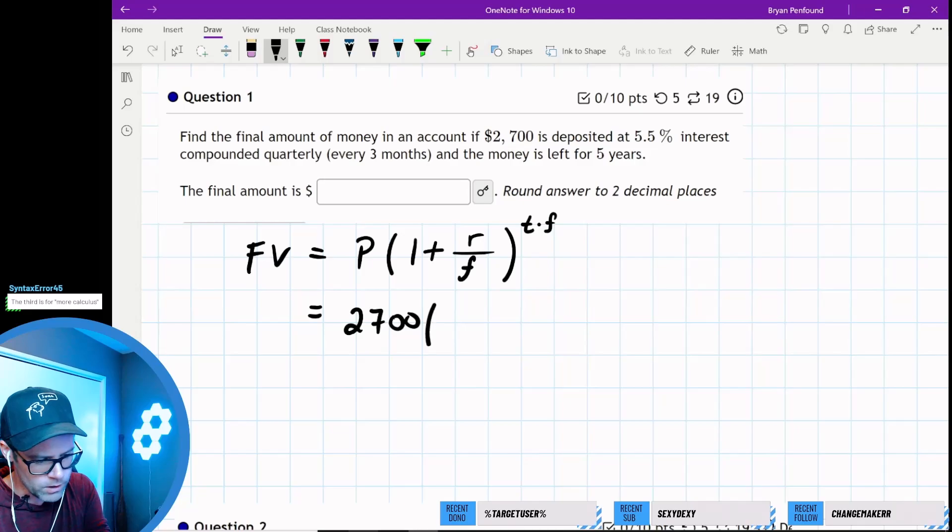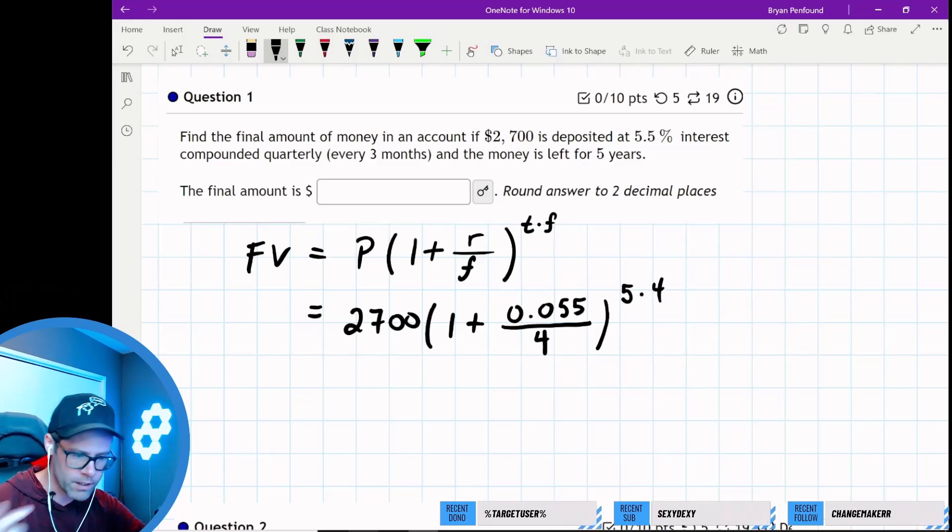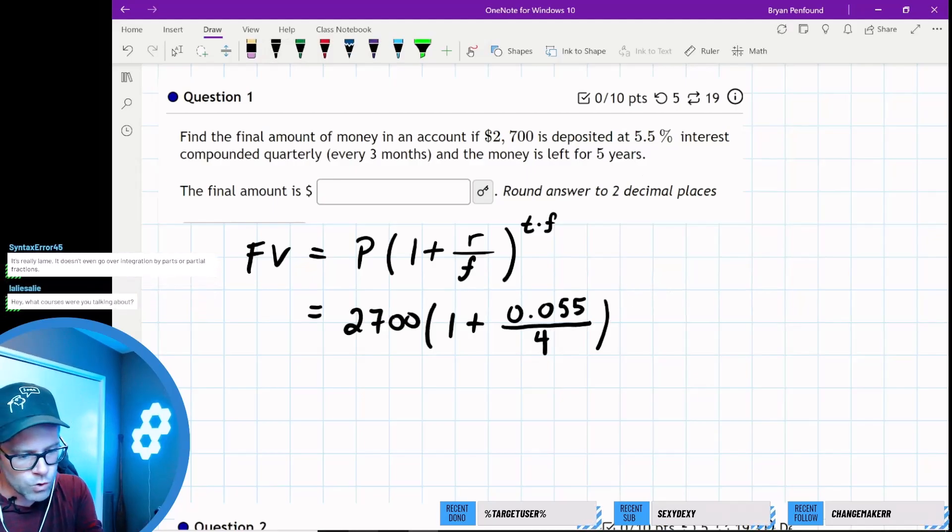We're going to deposit $2700 at 5.5% interest, compounded quarterly, so the frequency is 4. We're putting that money in for 5 years, so 5 times 4—there should be 20 compounds altogether over the course of five years.